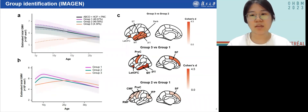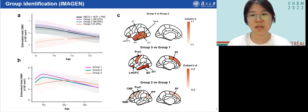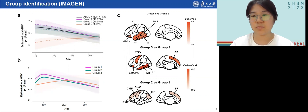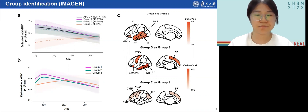Surprisingly, group 3's GMV increased, which was opposite to the population developmental trend. We expanded the curves by incorporating participants aged 22 to 38 years old from HCP young adults, and as we can see, a delayed neural development and brain maturation may be occurring in group 3.